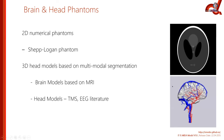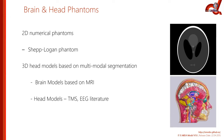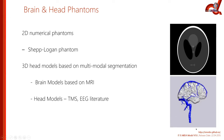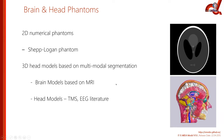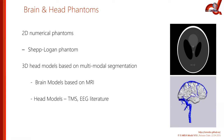In terms of head models, there are various 3D head models based on multimodal segmentation of both MRI and CT data, with nice literature available on those. Most brain models are based on MRI, but many head models come from diverse literature — TMS and EEG literature — where you care not just about the brain but also the whole head.